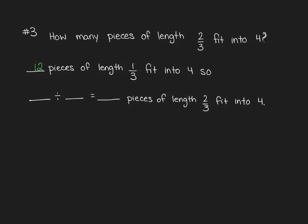Then I look, and I'm going to use this same number. So 12 pieces divided by our numerator here. It's going to be twice as long. So we'll have half as many groups equals 6. So 6 pieces of length 2 thirds fit into 4.